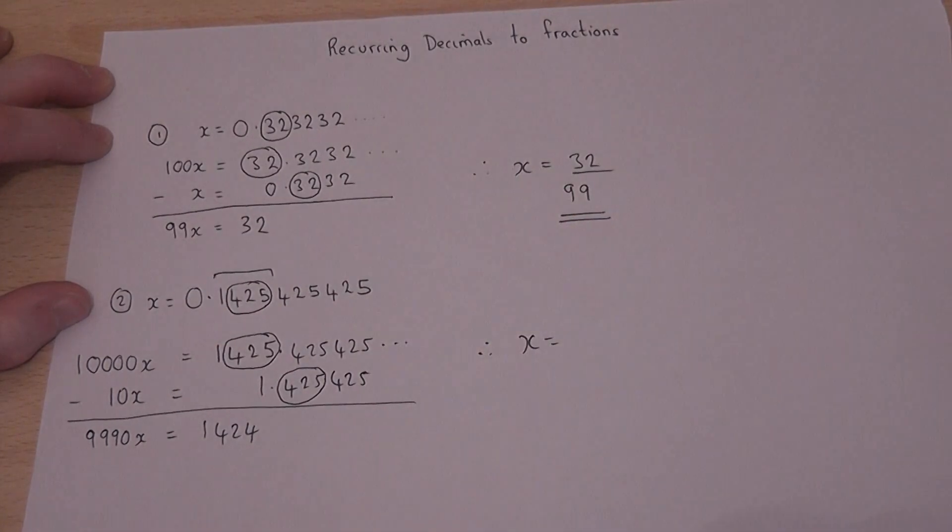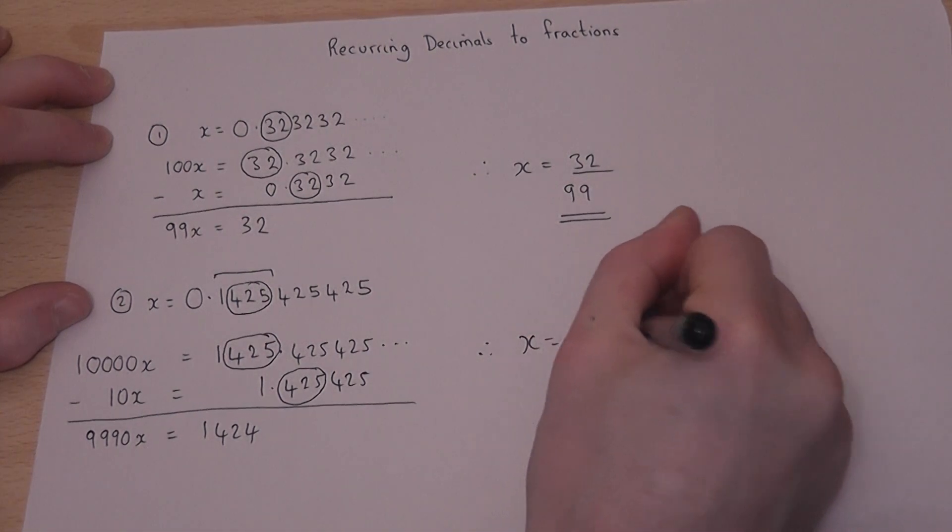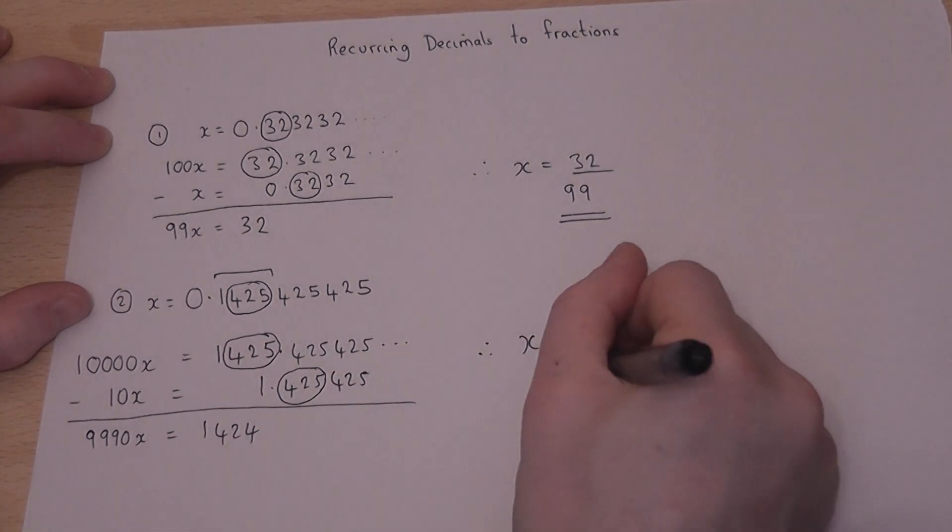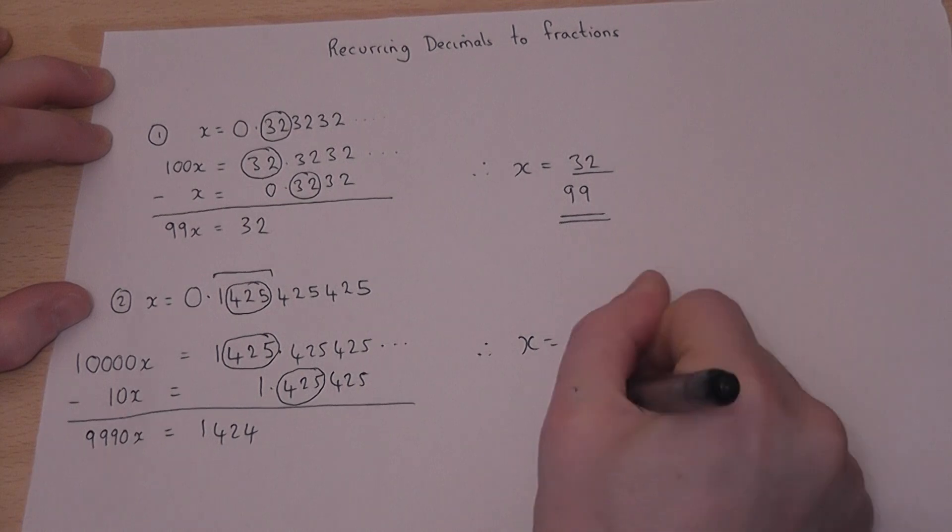So therefore, x must equal 1424 all over 9990.